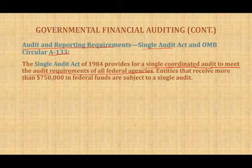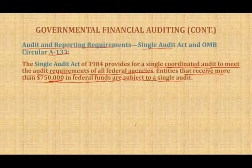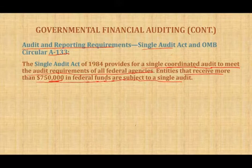Rather than having multiple audits — what used to be called Program Audits where each federal agency audited its own program — the Single Audit Act provides for a single coordinated audit to meet the audit requirements for all federal agencies. Entities that receive more than $750,000 in federal funds are subject to a single audit. This threshold can change from year to year, but currently it is $750,000.